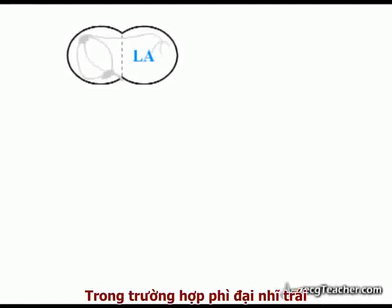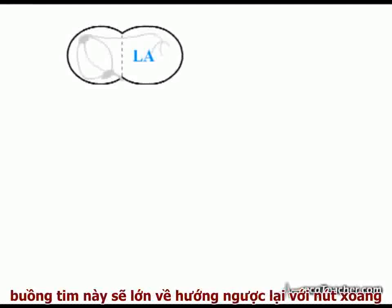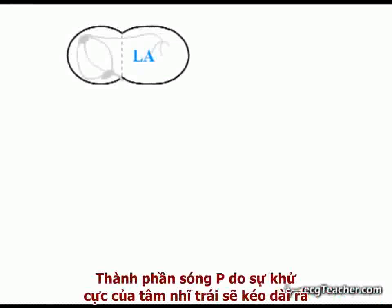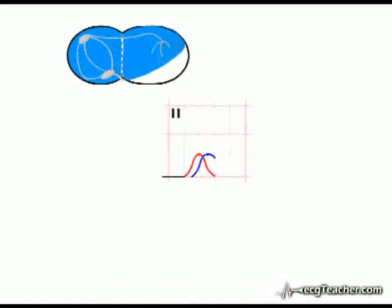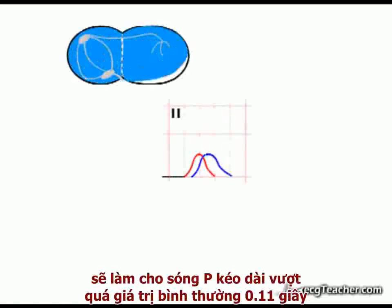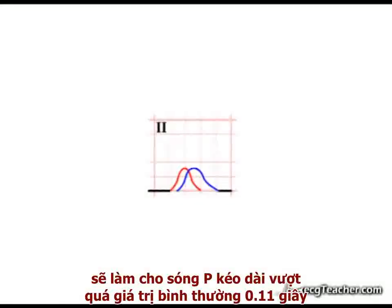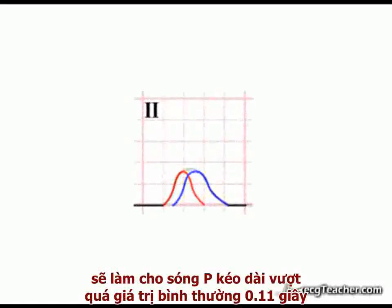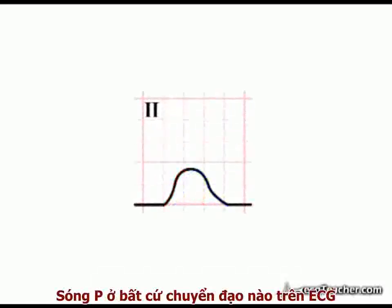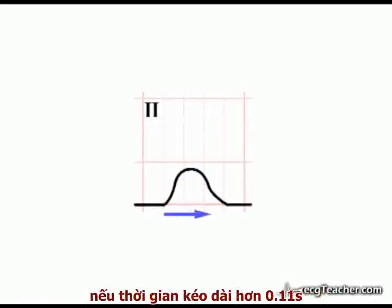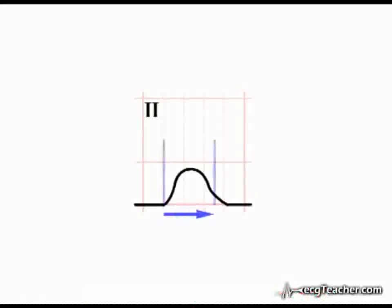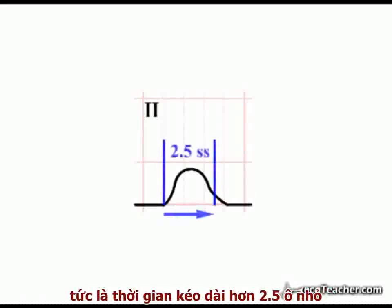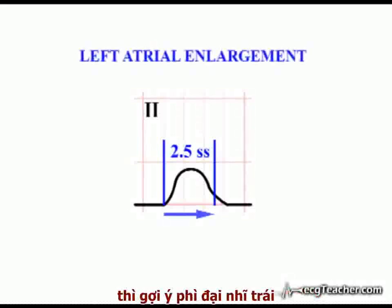In left atrial enlargement, as the chamber enlarges away from the SA node, the component of the P-wave due to left atrial depolarization is prolonged. The effect of this is to prolong the recorded P-wave beyond the normal limit of 0.11 seconds. A P-wave in any lead on the ECG longer than 0.11 seconds in duration — in practical terms more than 2.5 small squares in width — is highly suggestive of left atrial enlargement.